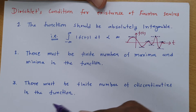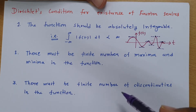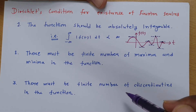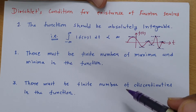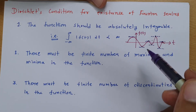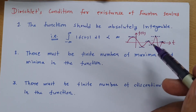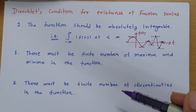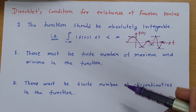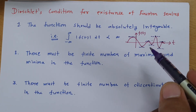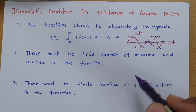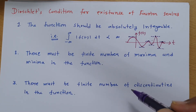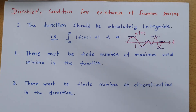The last condition is that there must be a finite number of discontinuities. Whatever discontinuities exist in the signal, they should be finite. If they are finite, then we can calculate the Fourier series of it. If they are unidentified or infinite, then we cannot have the Fourier series of that signal.